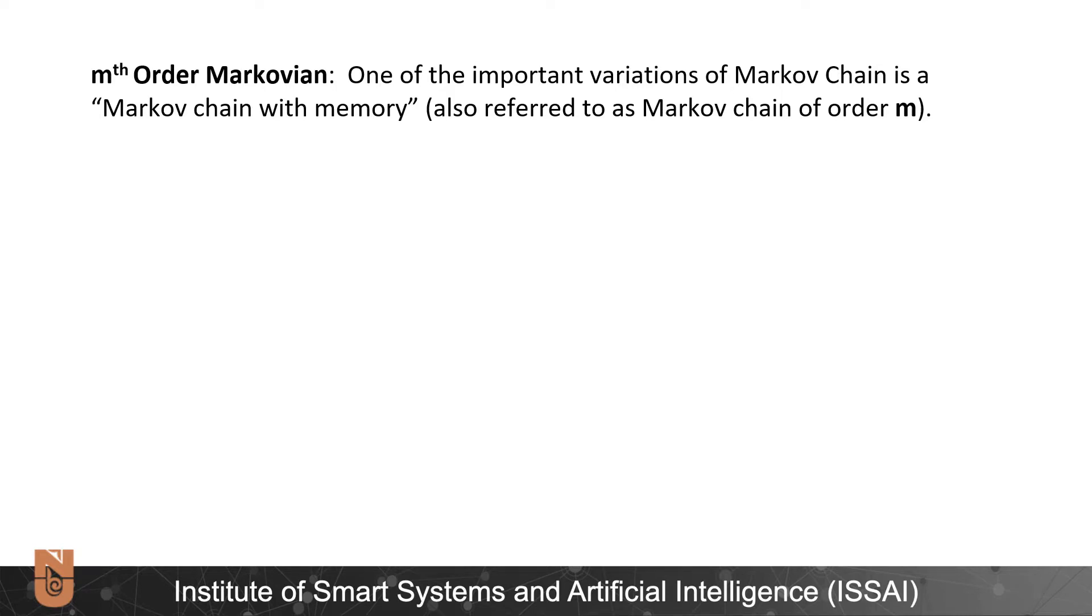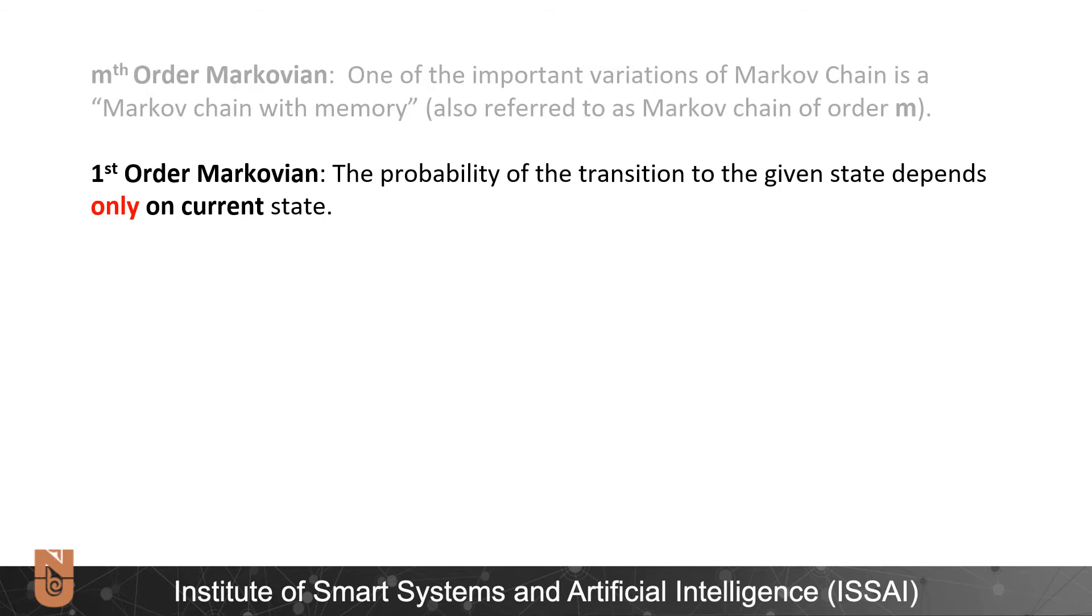One of the important variations of Markov chain is Markov chain with memory also referred to as Markov chain of order m. If the transition probability to the next state depends only on the current state we have a first order Markov chain.